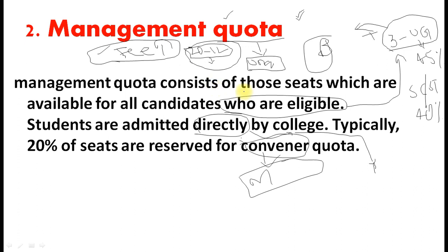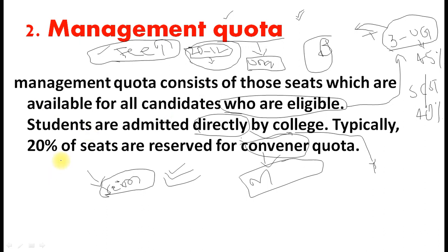There is a disadvantage in Management Quota — there is no fee reimbursement from the government. You will have to pay the tuition fee entirely on your own. So if you have the financial capacity, you can go for Management Quota, but you must plan your preparation and finances properly.